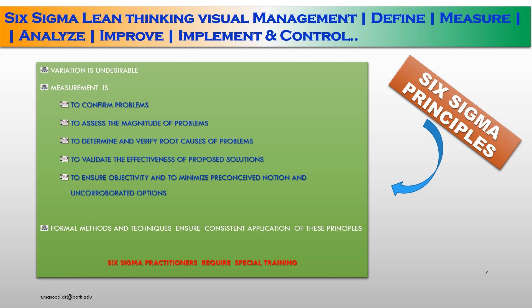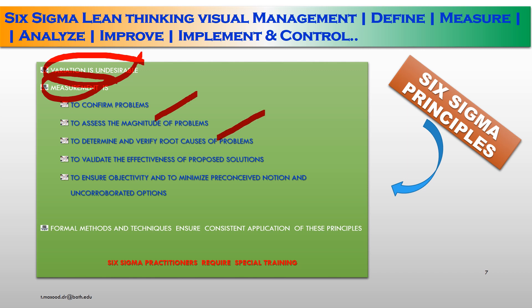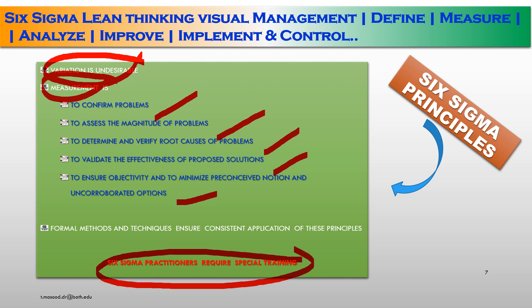Six Sigma principles: first, variation is undesirable and is the manifestation of most process problems. Second, measurement is critical — to confirm our problems, to assess the magnitude of the problems, to determine and verify root cause, to validate the effectiveness of proposed solutions, to ensure objectivity and minimize preconceived notions. Formal methods and techniques ensure consistent application of these principles. Six Sigma practitioners require special training to complete the Six Sigma principles.